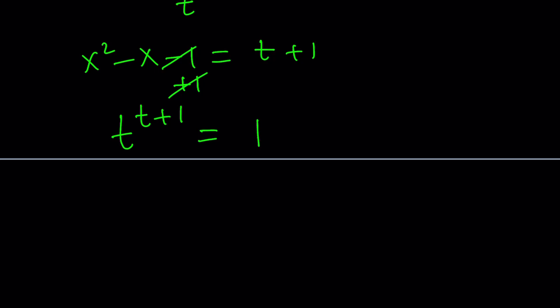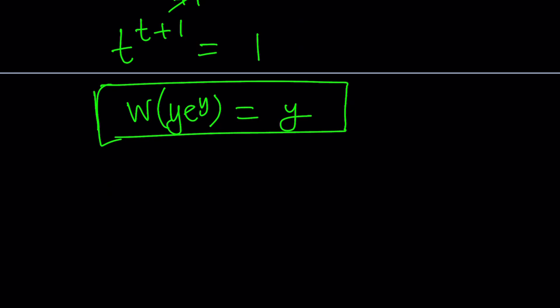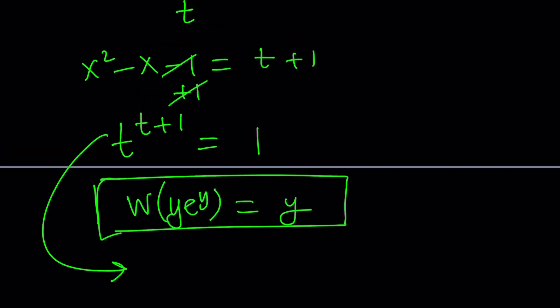So we have t to the power t plus 1 is equal to 1, and we're going to solve for t. A couple questions: Can we find real solutions? Can we find complex solutions? Are there any complex solutions? Can we use Lambert's W function? Because that kind of looks like it, right? Whenever we have something like t to the t, we can turn it into a form where we can apply Lambert's W function.